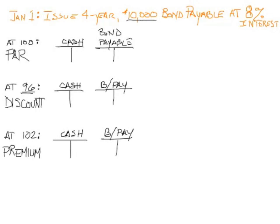If I sell at par, meaning I got $10,000 from the folks out there for my $10,000 bond, it's pretty simple accounting. I receive $10,000 and I have a bond payable for $10,000 — I owe them. So on the issue date, this is all that I will put.